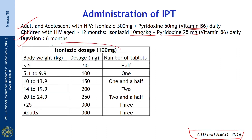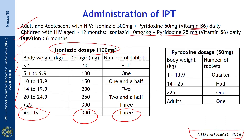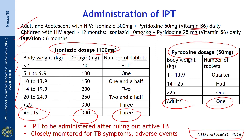Isoniazid is available as 100 mg tablets and the dosage is as per body weight. For adults, it is 300 mg daily, or 3 tablets. Pyridoxine is available as a 50 mg tablet, also given based on body weight in children, while in adults one tablet is taken along with isoniazid. Isoniazid preventive therapy must always be administered after ruling out active TB in this population, and patients should be closely monitored for TB symptoms and adverse events.